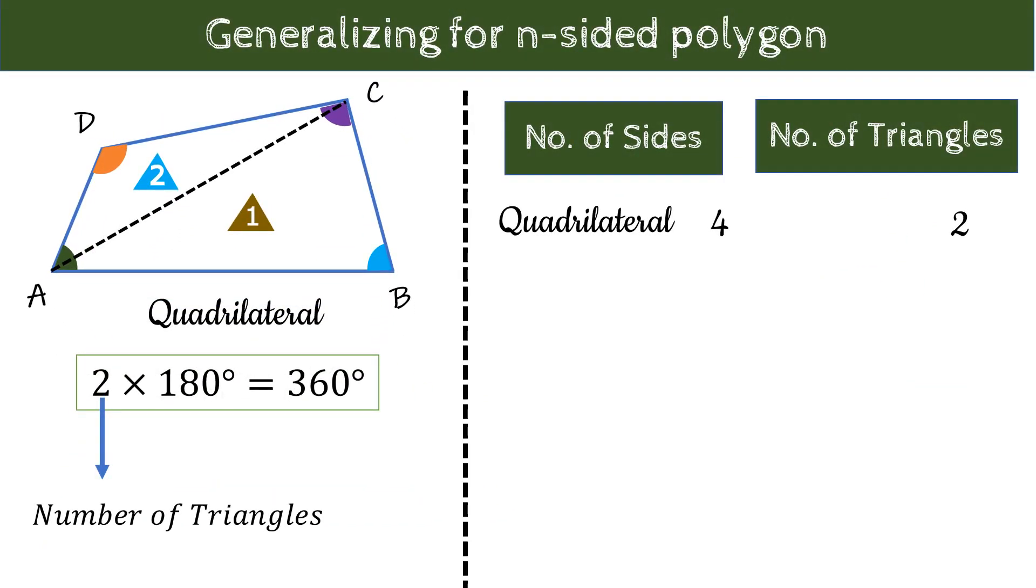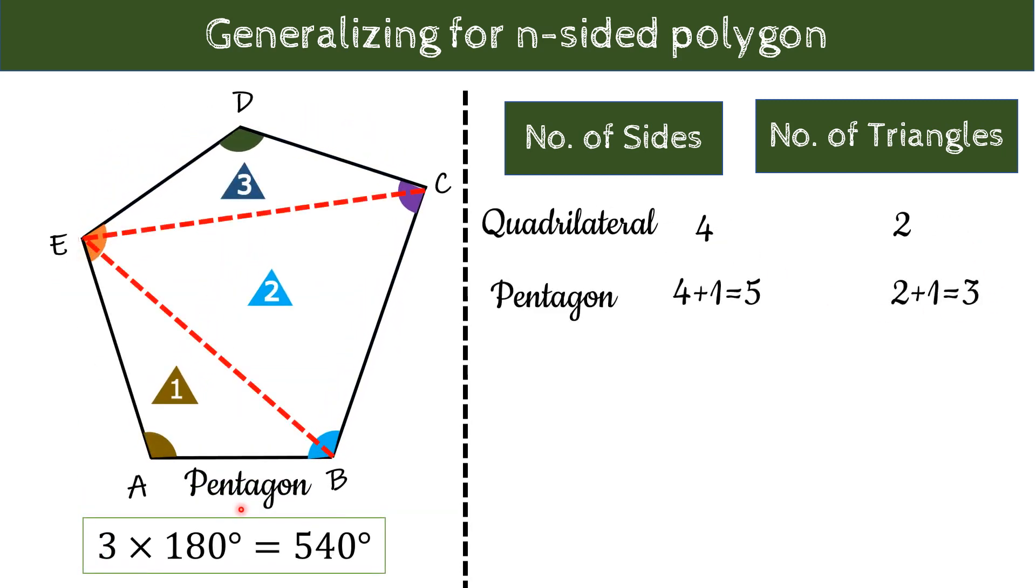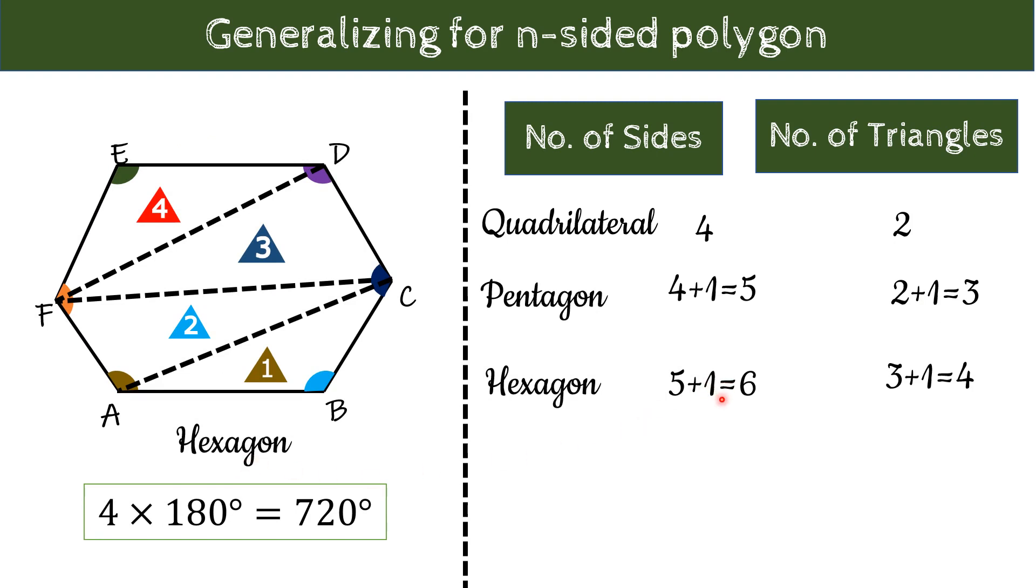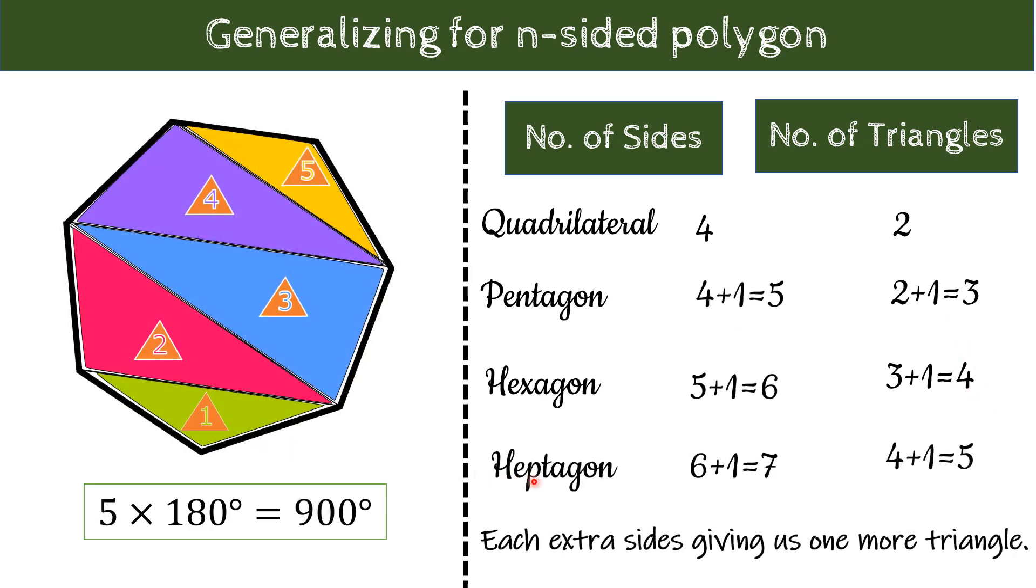Let us try to find a general formula which should be applicable for N-sided polygon. In a four-sided quadrilateral we got two triangles. So, four sides give us two triangles. Here, in the pentagon, जो five sides से बना हुआ है इसमें हमें three triangles मिलते हैं. अगर quadrilateral से compare करें तो pentagon में one side ज्यादा है और one triangle भी ज्यादा है. Similarly, hexagon में six sides हैं और ये pentagon से one side ज्यादा है. And here, we got one more triangle as compared to pentagon, that is four triangles. और seven-sided heptagon में total five triangles हैं. If you closely observe, then you get that for each extra sides we have got one more triangle.